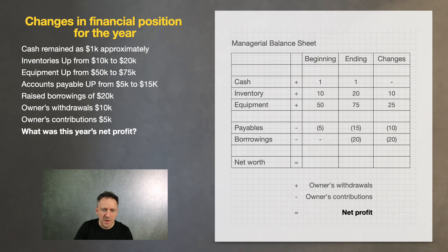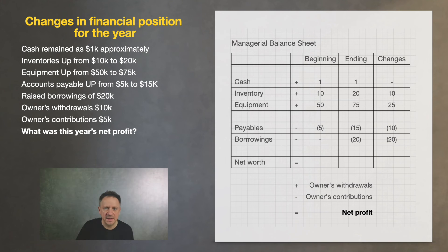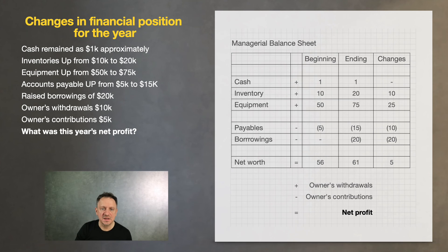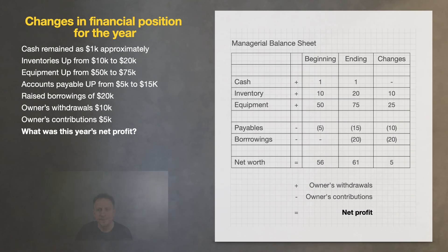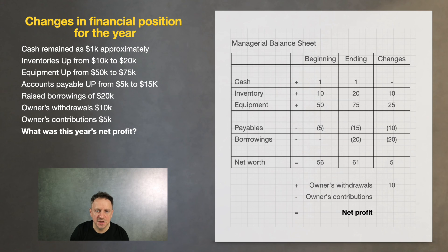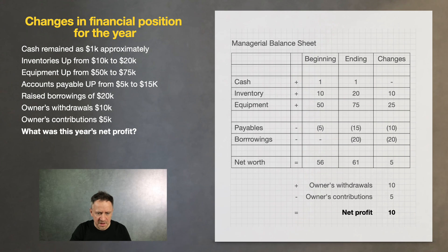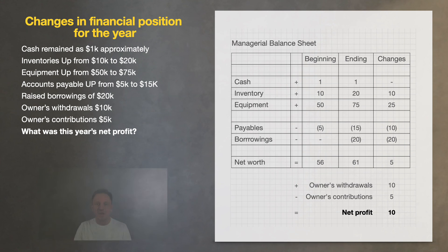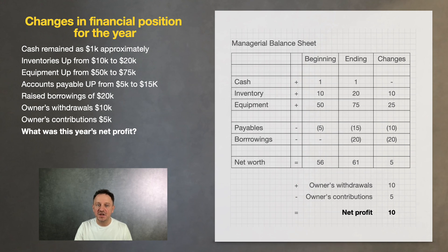He borrowed 20k. Now, summing up his net worth — he started from 56k and finished with 61k. He raised his net worth by 5,000. Not a big deal, but quite something. Plus 10k which he took out, minus 5k he returned. So we have 10k. That means his net profit was 10k for this year.